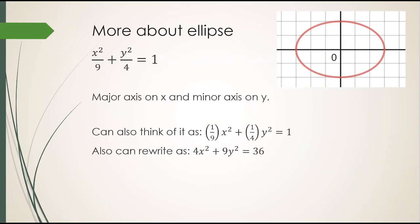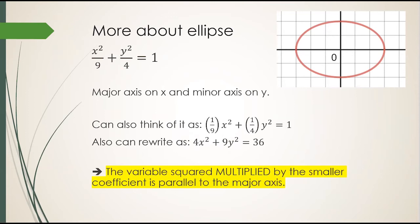Either way, notice this. The variable that's multiplied by the smaller coefficient tells you where the major axis is. That is because being divided by a larger denominator means you're being multiplied by the smaller fraction. 1 ninth is a smaller fraction than 1 fourth. If you multiply both sides by 36, you get the coefficient of 4 smaller than the coefficient of 9. So, large denominator, small fraction, small coefficient, major axis. Or you can go the other way around. Small coefficient, large denominator, major axis.